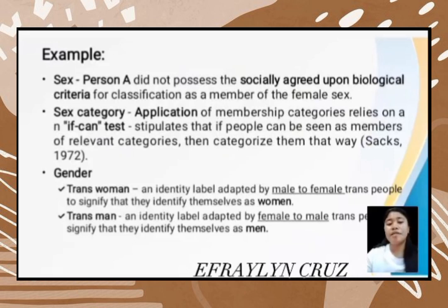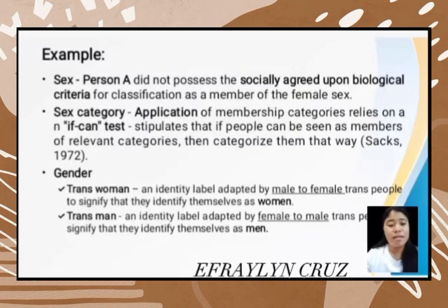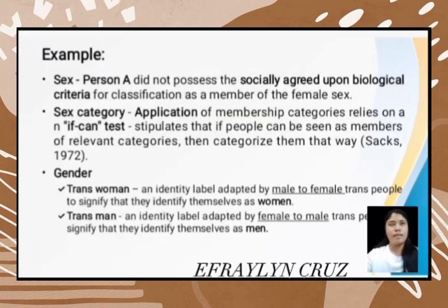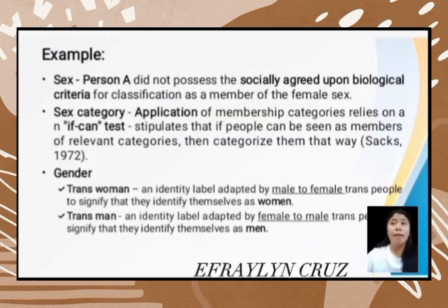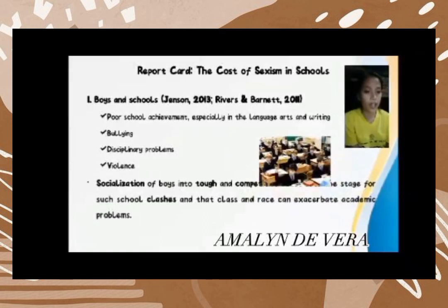Regarding gender: a trans woman is an identity level adapted by male-to-female trans people to signify that they identify as women — these are biological males who want to become female. A trans man refers to biological females who want to become male — female-to-male transition.